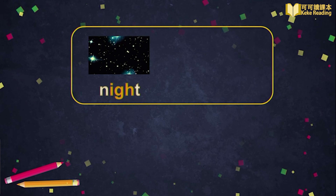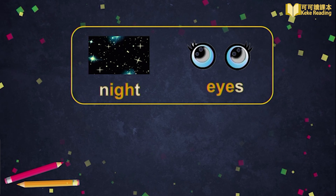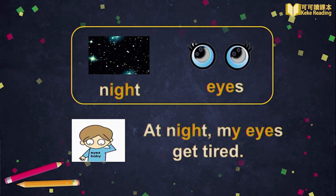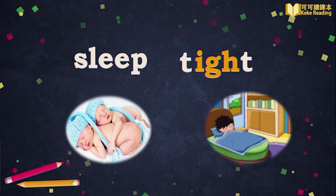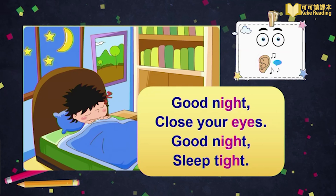Sleep tight. Good job. Now look — it's night. Night. We have two eyes. Eyes. And at night, our eyes get tired. 晚上，我的眼睛累了。When you sleep tight, your sleep is very good. 小朋友们，当你想表达睡得很香的时候，你可以说：sleep tight. 学会了吗?